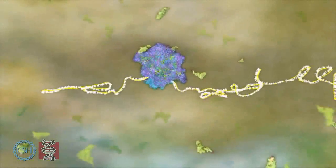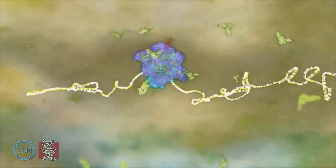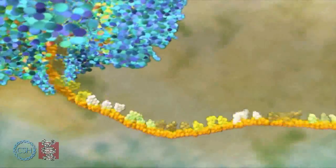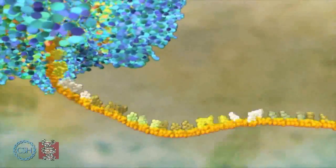Special transfer molecules, the green triangles, bring each amino acid to the ribosome. Inside the ribosome, the RNA is pulled through like a tape.